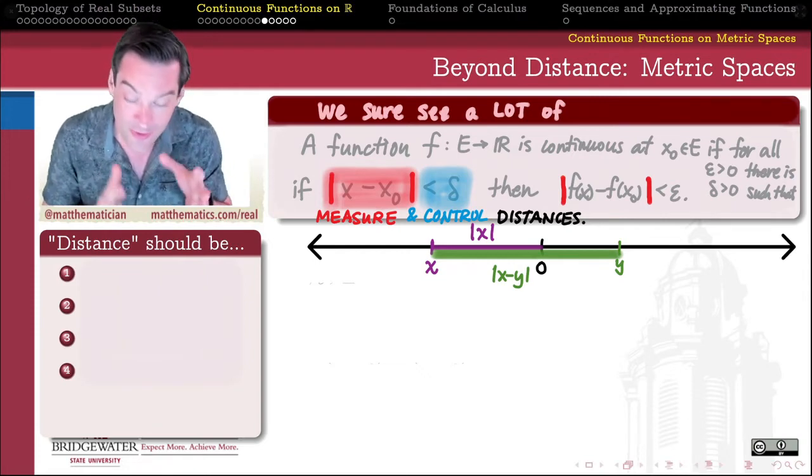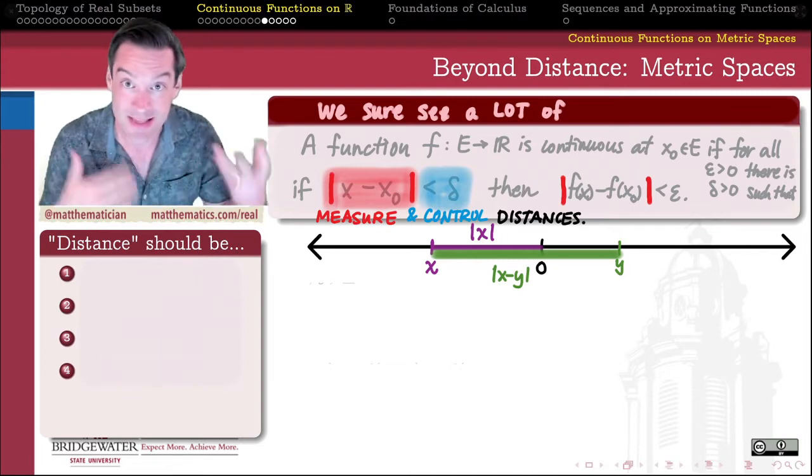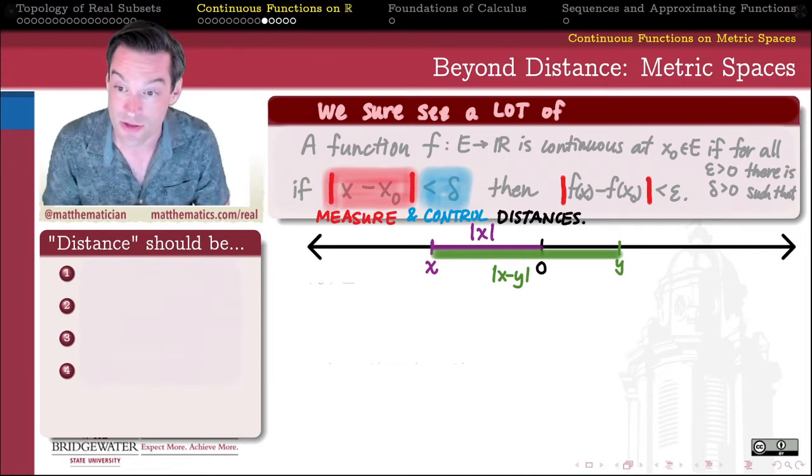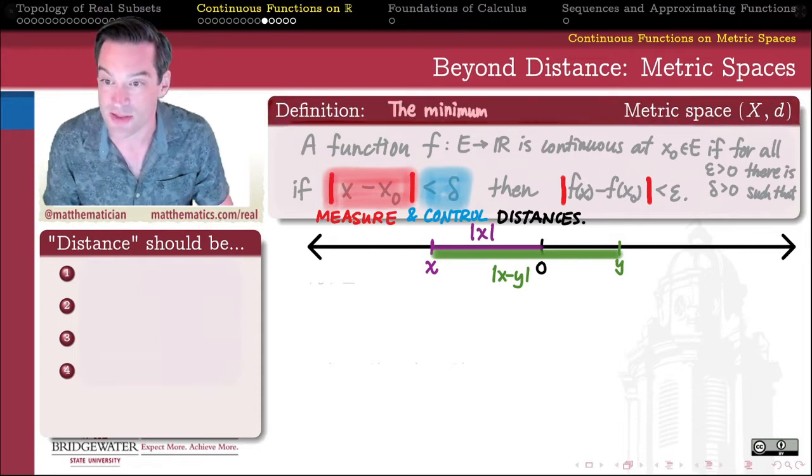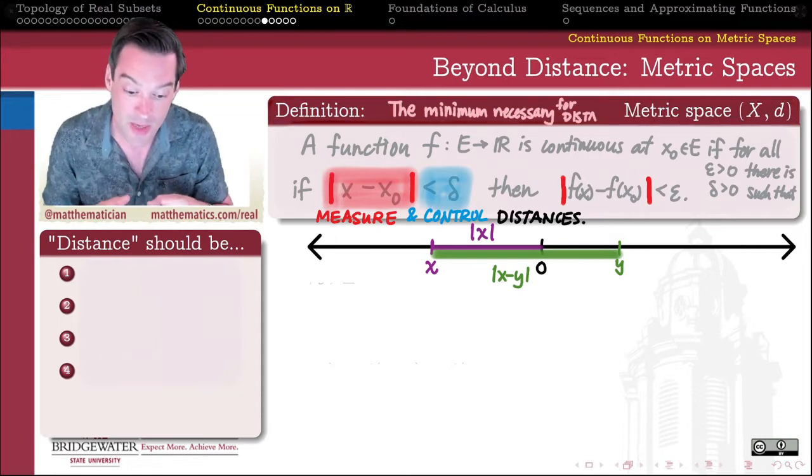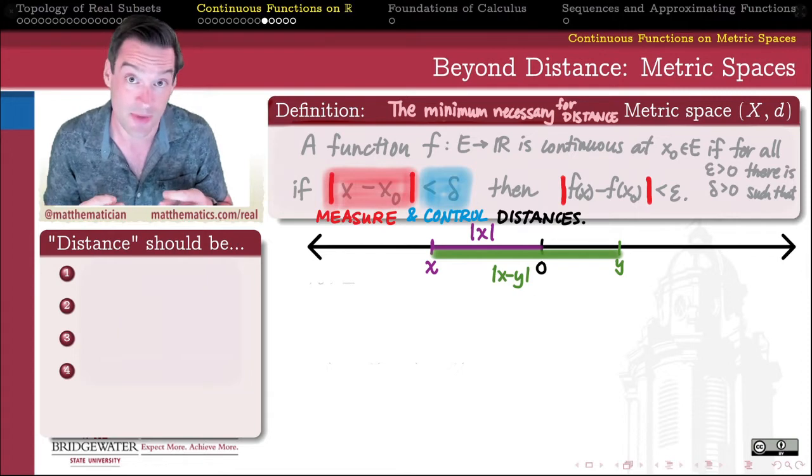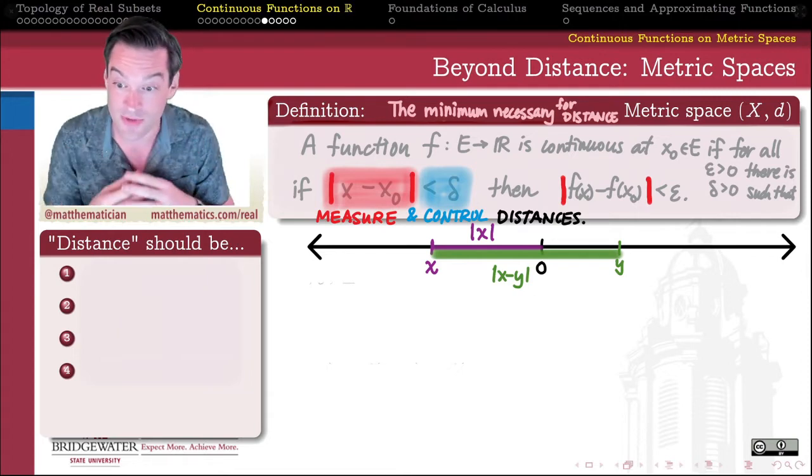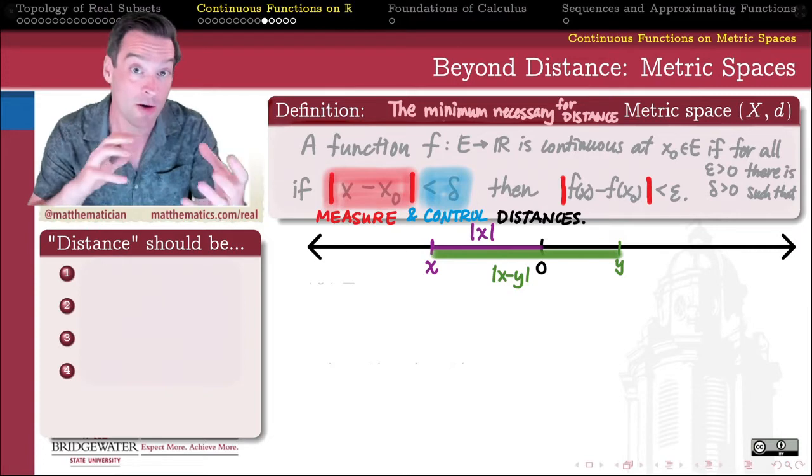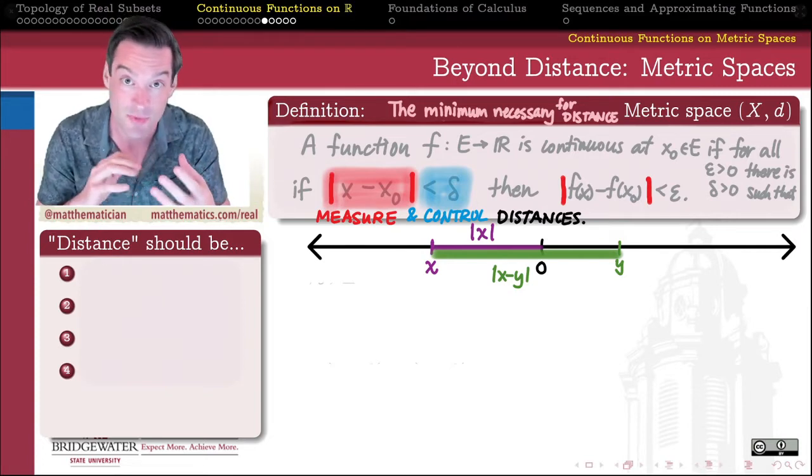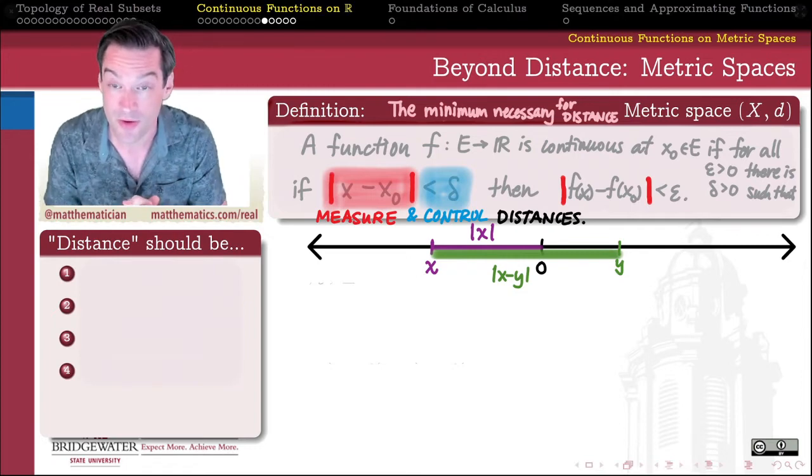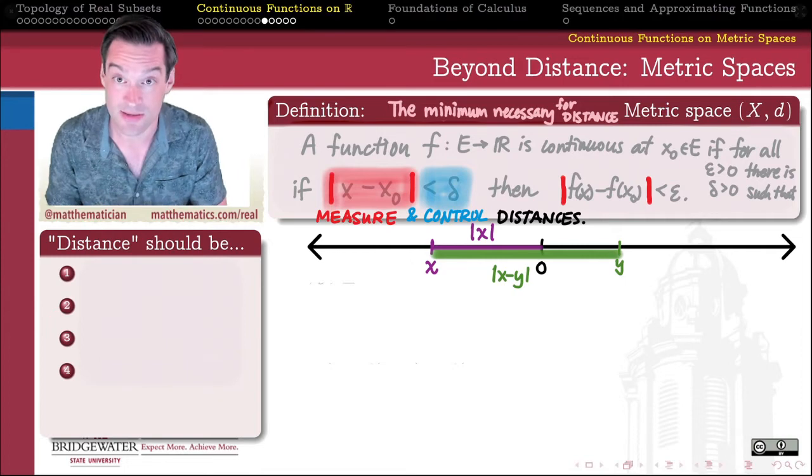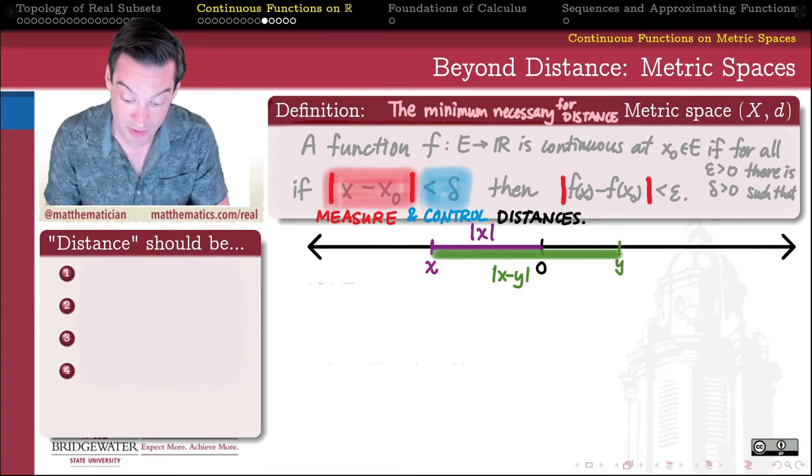That's what all those absolute values and less than epsilons and less than deltas in our analysis definitions are doing for us. They're measuring and controlling a distance. So if we want to get to know distance a little bit better, we should think what is the minimum structure that's necessary for us to come up with some coherent idea of distance that is going to comport with our ordinary ideas of distance from absolute value. What is the essence of what it means to measure a distance? That's what's being captured in the definition of a metric space.